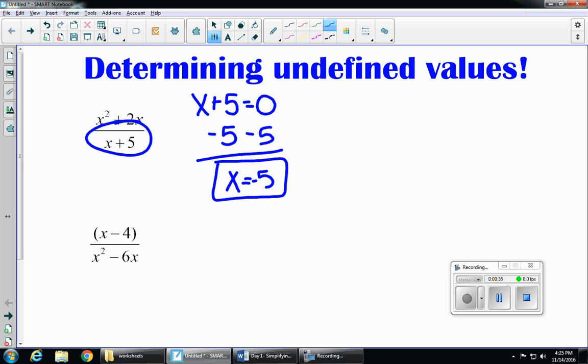Sometimes they're also called excluded values, and you may see it from time to time written like this, which says x cannot equal negative 5.